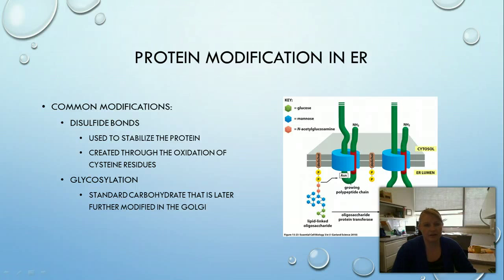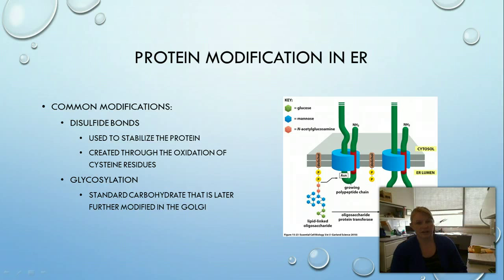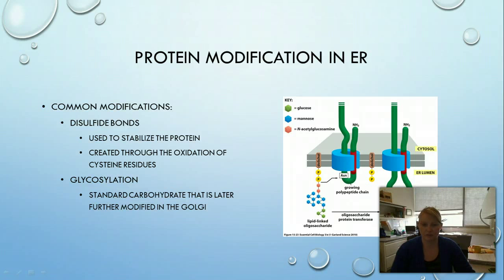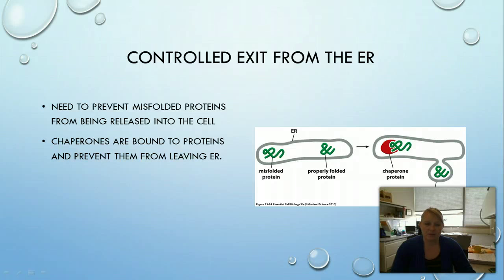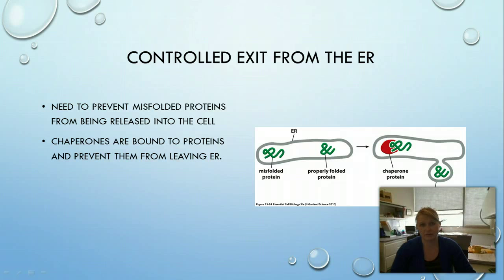We start in the ER, where the protein has been fed through the different channels and is first modified. Common modifications include disulfide bonds or glycosylation — the addition of a carbohydrate. It's a standard glycosylation at this point, not yet specific, and these modifications add markers that the proteins will need when they get to the membrane. Chaperone proteins control quality: they can detect when a protein is misfolded and hold on to it, preventing it from budding off, while properly folded proteins bud off and leave the ER.